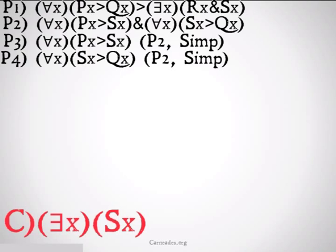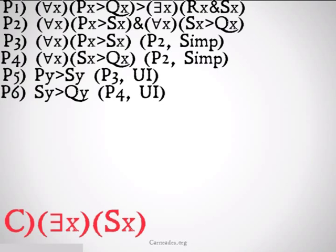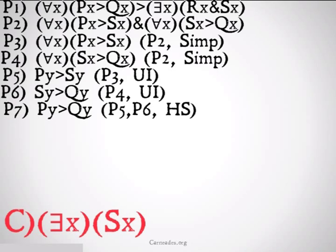I want to do a hypothetical syllogism since I have PX implies SX and SX implies QX. But in order to do that, I need to get those statement functions out from under the quantifier 'for all X.' To do that, I use universal instantiation. So I get 'PY implies SY' from premise three by UI, and 'SY implies QY' from premise four by UI. From those, I conclude 'PY implies QY' by hypothetical syllogism on lines five and six.